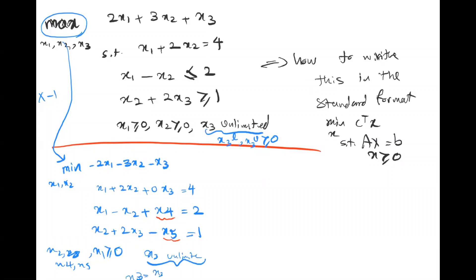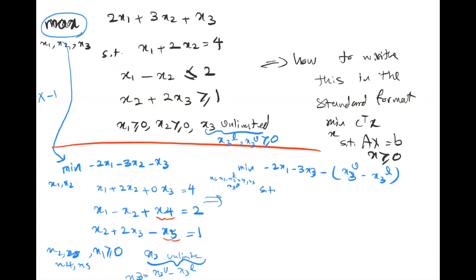The next step is to replace x3 with x3u - x3l throughout the new optimization problem so that all variables are positive. In the objective, x1 and x2 remain the same; x3 is replaced by x3u - x3l. This puts everything in standard format with all variables positive.